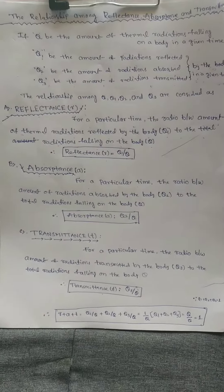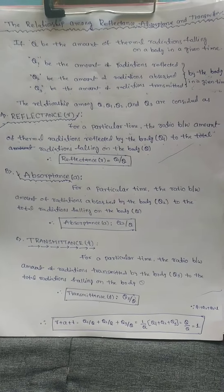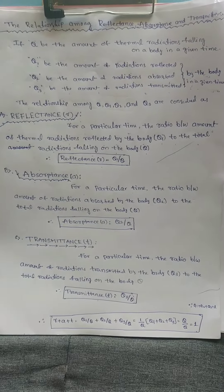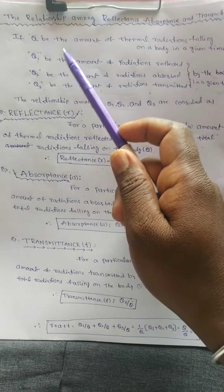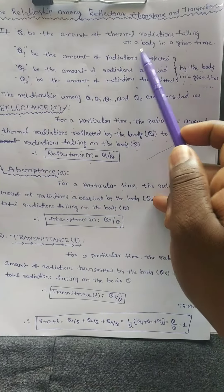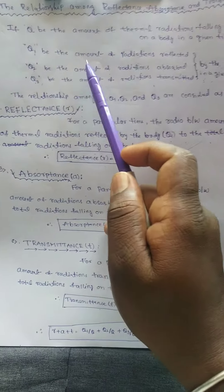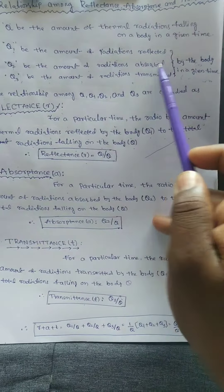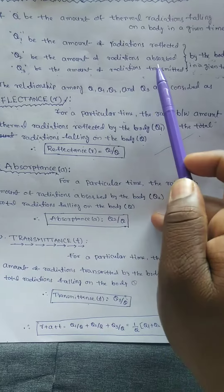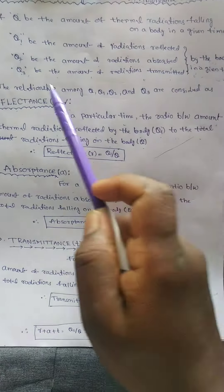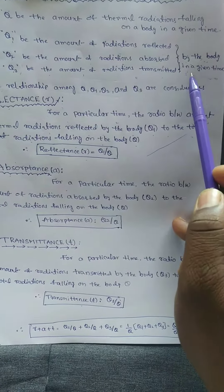Hi, welcome to AGS RL channel. Today's topic is the relation among reflectance, absorbance, and transmittance. Let Q be the amount of thermal radiations falling on a body in a given time, Q1 be the amount of radiation reflected by the body, Q2 be the amount of radiations absorbed by the body, and Q3 be the amount of radiations transmitted by the body in a given time.